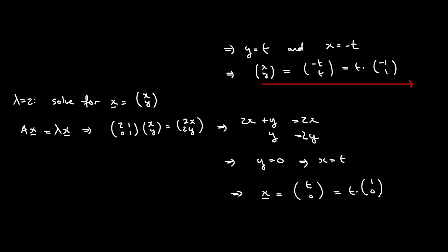So for the eigenvalue lambda equal to 2, all eigenvectors corresponding to this eigenvalue are just given here.